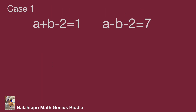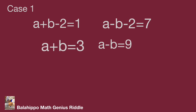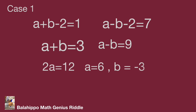In case 1: a plus b minus 2 equal to 1 and a minus b minus 2 equal to 7. Solving gives a plus b equal to 3 and a minus b equal to 9. But this leads to b being negative, and since b is a positive integer, the result is false.